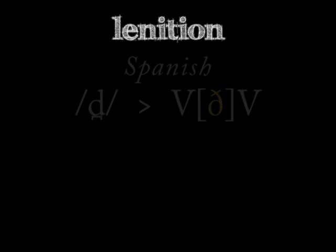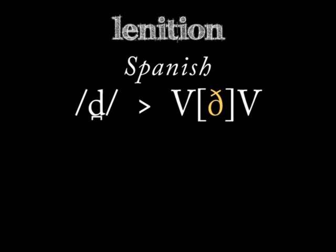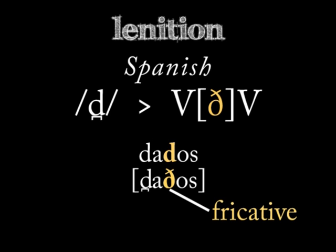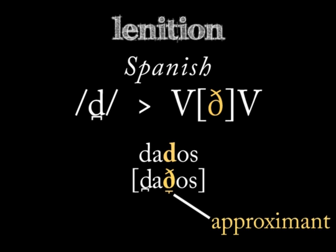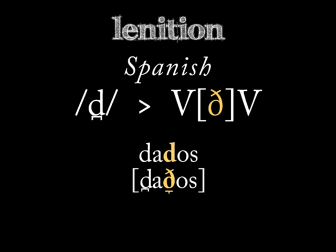The Spanish stop /d/ is lenited to a fricative /ð/ between vowels. So the word 'dados' is phonologically produced with this middle /ð/. Most speakers glide past this middle sound with even less restricted airflow — 'dados'. Some speakers take the lenition a step further by omitting it entirely — 'dados'.